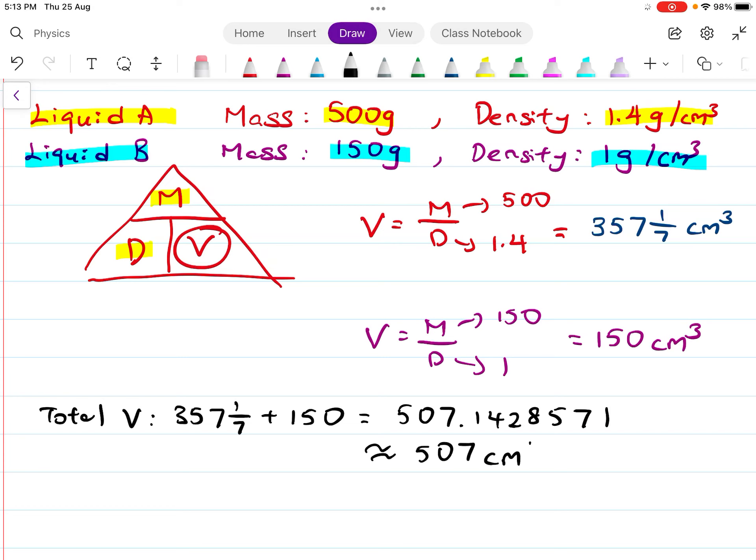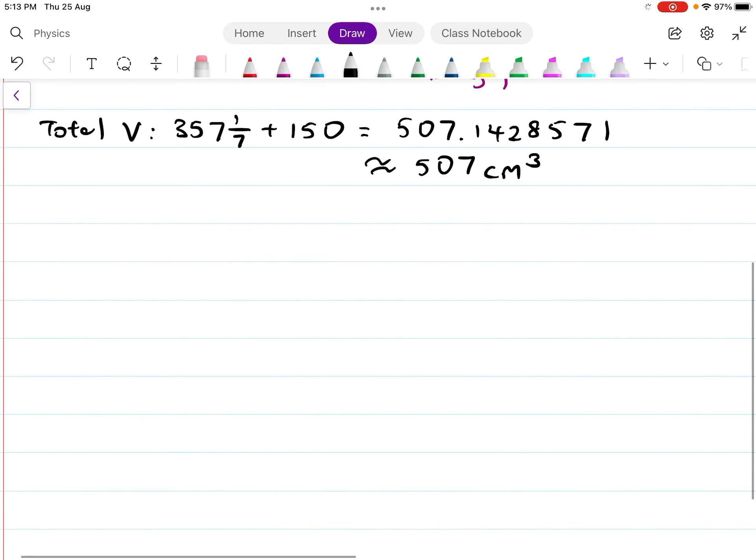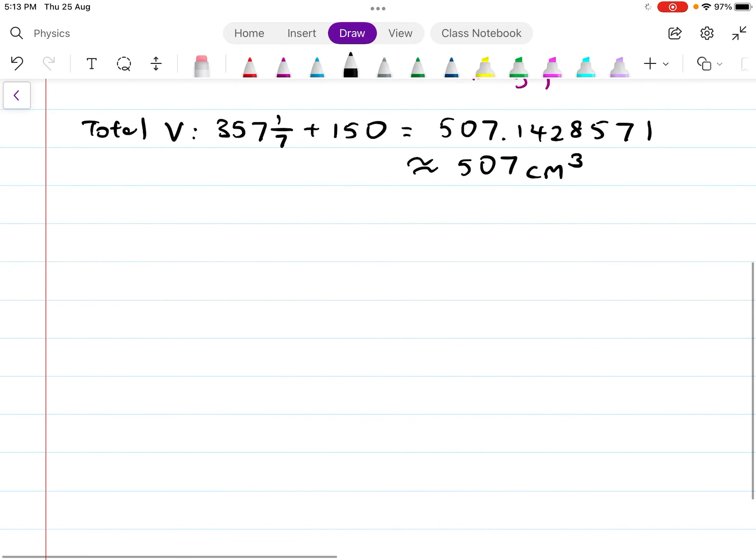Part B asks us to find the density of the total mixture. First, you need to get the total mass, because I already have the total volume. Total volume is about 507.